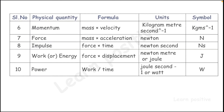Momentum: formula is mass × velocity, unit is kilogram metre per second, symbol kg·m·s⁻¹. Force: formula is mass × acceleration, unit is newton, symbol N. Impulse: formula is force × time, unit is newton second, symbol N·s. Work or energy: formula is force × displacement, unit is newton metre or joule, symbol J. Power: formula is work divided by time, unit is joule per second or watt, symbol W or J·s⁻¹.